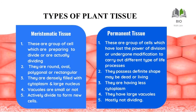Plant tissue is of two kinds: meristematic and permanent. Meristematic tissue refers to a group of cells which are preparing to divide or are actually dividing — these cells continuously divide. Permanent tissue refers to a group of cells which have lost the power of division or have undergone modification to carry out different types of processes — cells that have lost their divisional capacity.